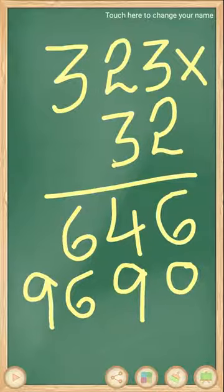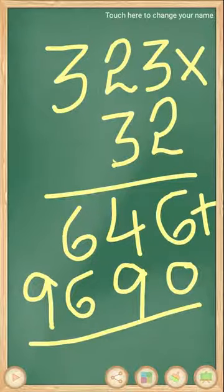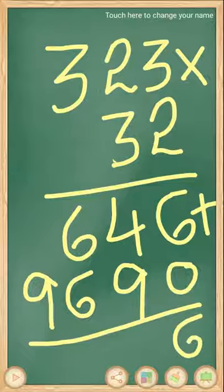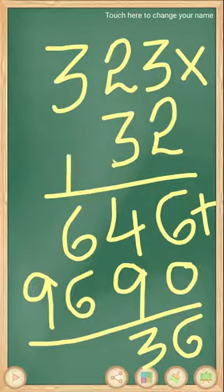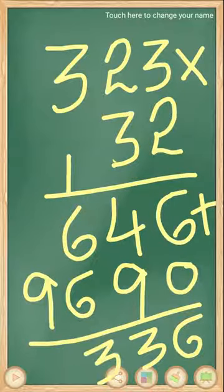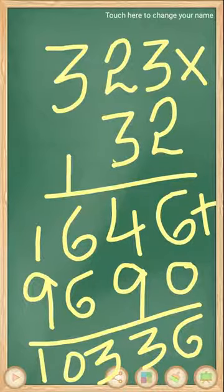Then you add all the numbers. That is 6 plus 0 equals 6, 9 plus 4 equals 13, carry 1, 9 plus 1 equals 10, carry 1, 9 plus 1 equals 10. So the answer is 10,336.